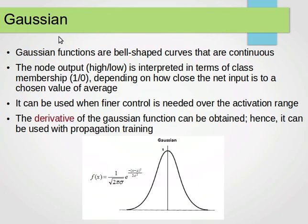The Gaussian function is based on the normal distribution, if you remember your basic statistics. It's the bell-shaped curves that are continuous. The node output, which can be either high or low, is interpreted in terms of class membership. So it belongs to class 1 or class 0, depending on how close the net input is to a chosen value of the average.